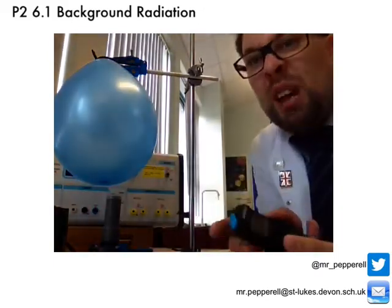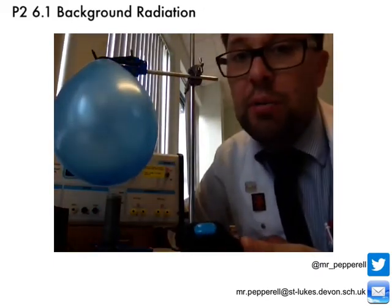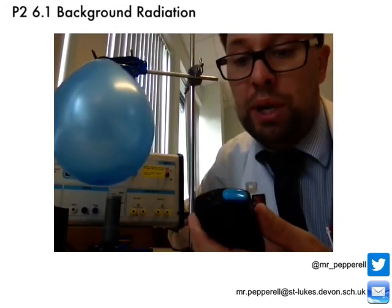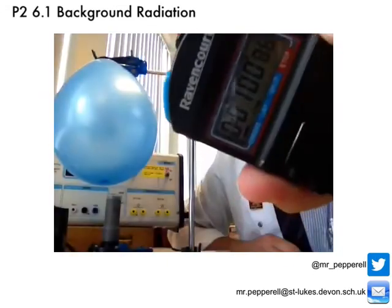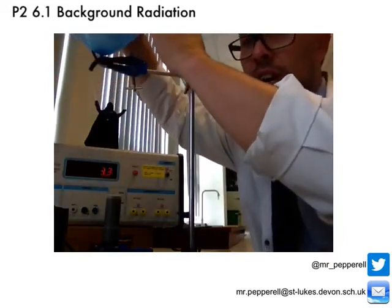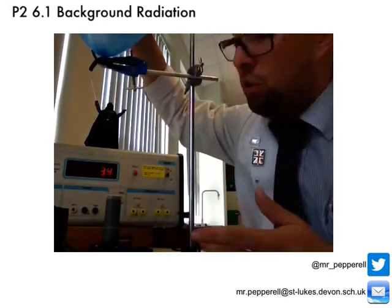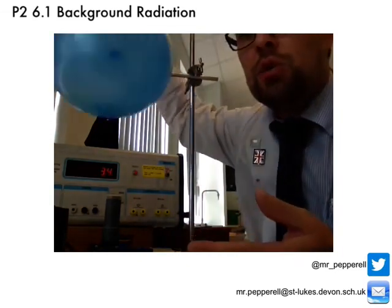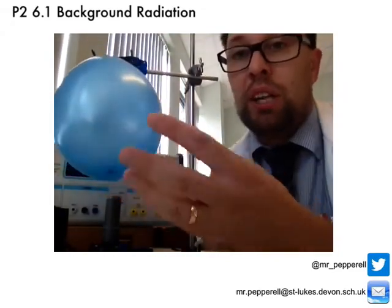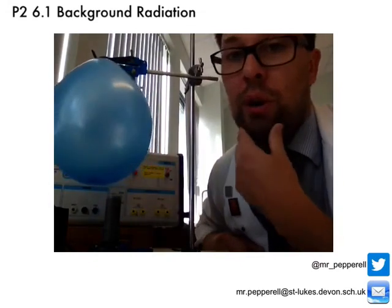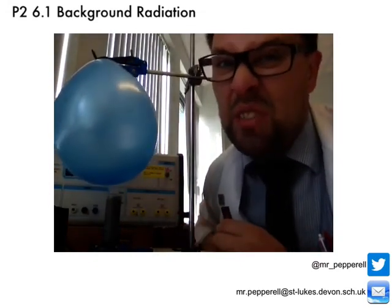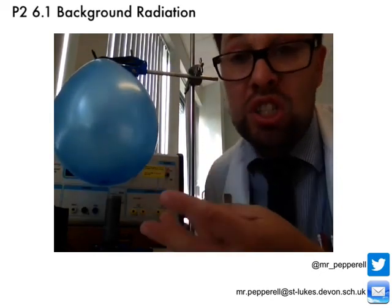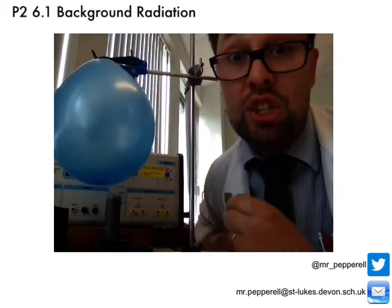We're coming up on our minute now — the balloon has been there and the Geiger counter has been counting up. Let's see after a minute if we've got a higher count rate due to the radioactive particles and dust the balloon has picked up. That's 57, 58, 59 — a minute — and if we get out of the way we can see that our count rate is now up on 33 to 34. That's almost double — in fact it is double — what we had as a normal background count rate. The electrostatic charge on the balloon has picked up more particles and dust which are emitting radioactive particles. It's not a very scientific experiment admittedly, but it's a simple demonstration that dust in the air is a source of background radiation.